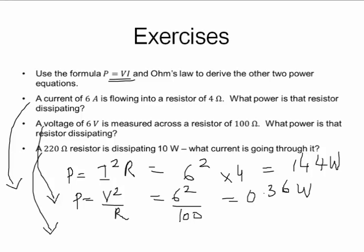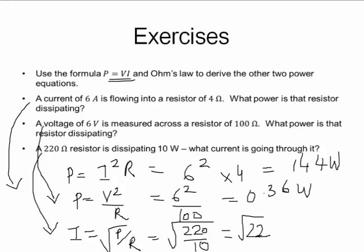Third one. 220 ohms resistor dissipating 10 watts, what's the current. So we know that current is square root of P divided by R, square root of 10 divided by 220, which is square root of 22. Square root of 22, what is square root of 22? 4.69. So does this make sense everyone?